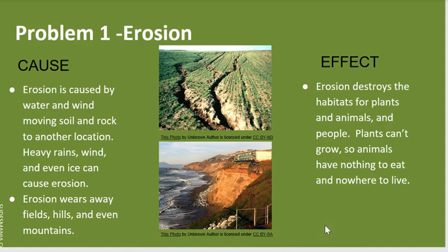What are the effects? Erosion destroys habitats for plants and animals and people. Plants can't grow, so animals have nothing to eat and nowhere to live.